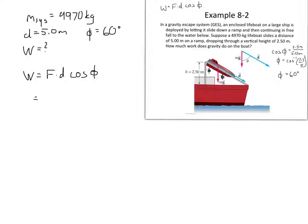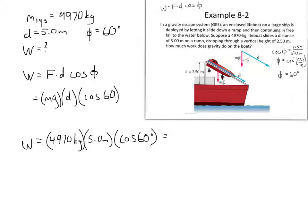Now let's write out what our force is. The force that's being applied, in this case by gravity, is mg, the weight force. And the distance is d. And phi, cosine phi is 60 degrees, so we have a cosine of 60. So let's just put in our mass and our gravity and our distance, and we should be able to solve for the amount of work that gravity does for us. So work is going to be 4,970 kilograms, that's the mass of the little escape boat right there, times 5.0 meters, times a cosine of 60 degrees. That'll give us our work that gravity does for us on this escape pod system.